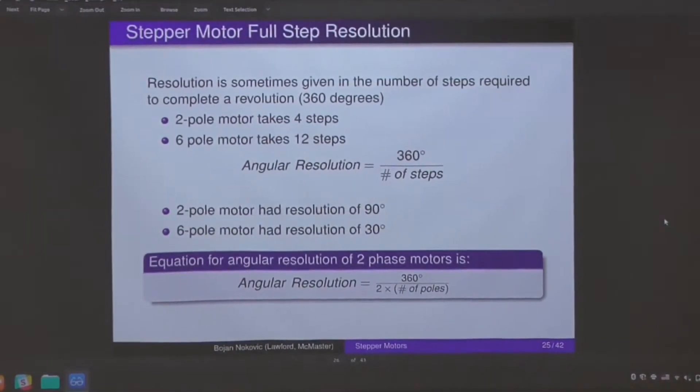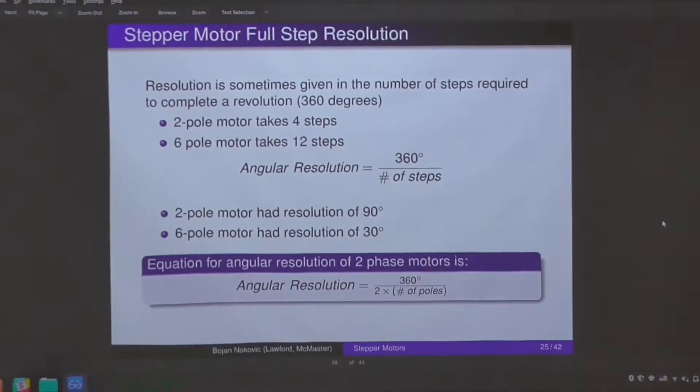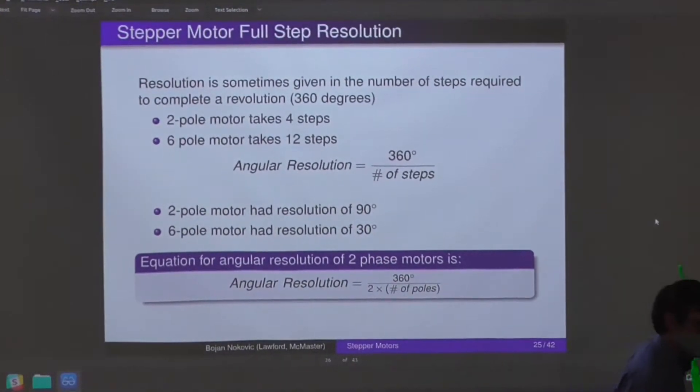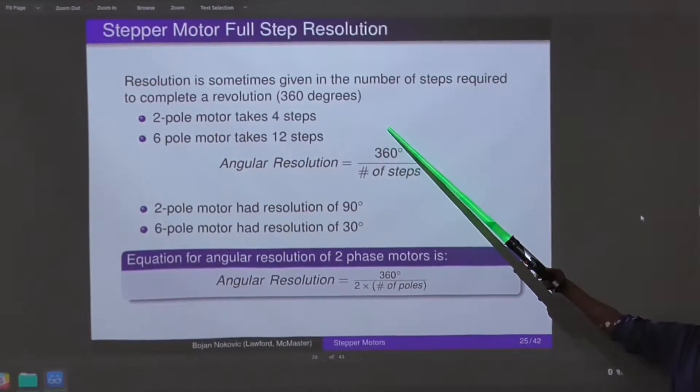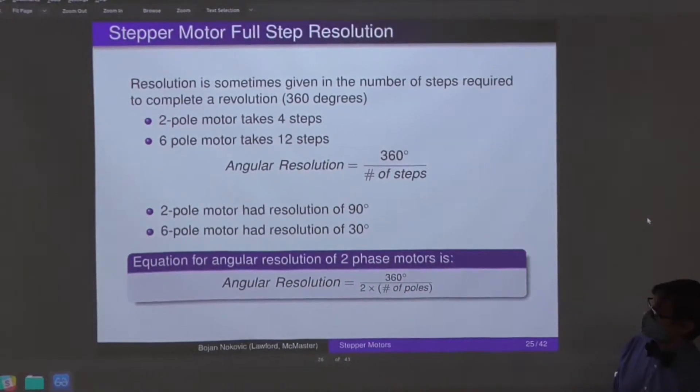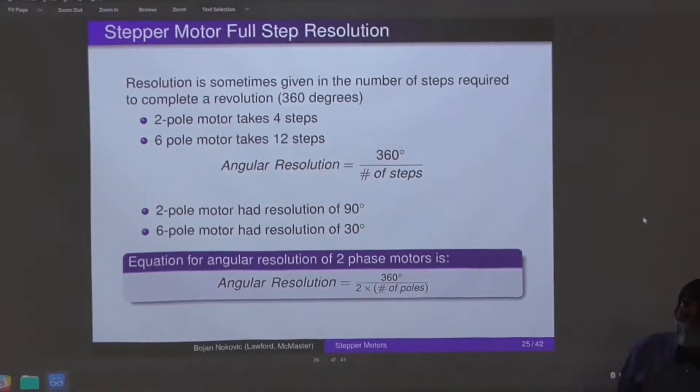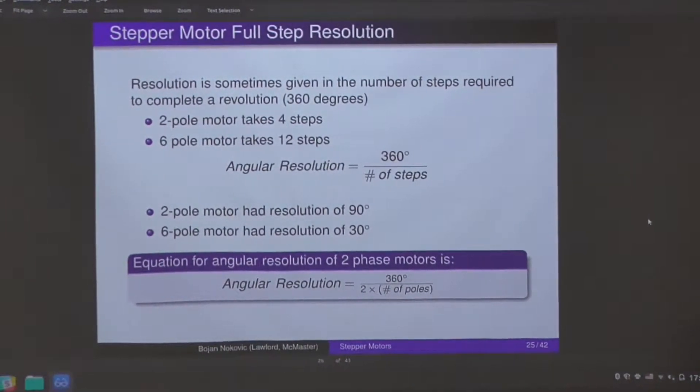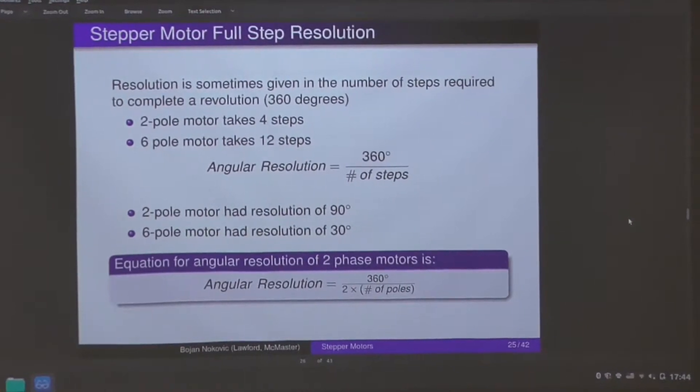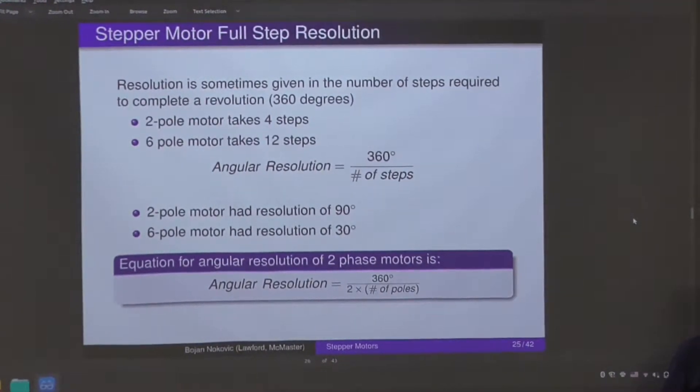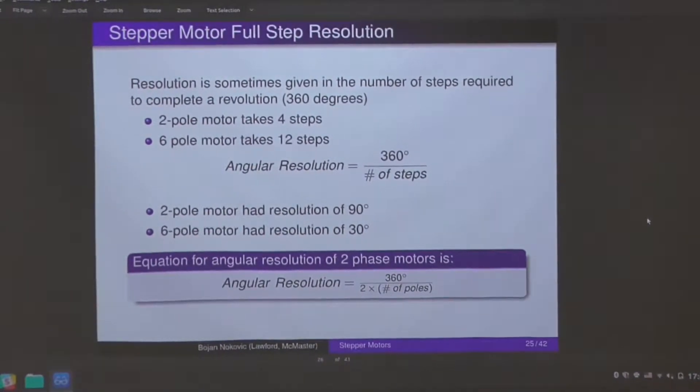That leaves us about where we were. We went through this example. Resolution is sometimes given in the number of steps required to complete a full revolution. So if we have a two-pole motor that takes four steps. If we have a six-pole motor, that takes 12 steps. The angular resolution of a stepper motor is equal to 360 degrees divided by the number of steps, where the number of steps is the number of poles multiplied by the number of phases. Make sense? This should be fairly intuitive from the manner in which we are adding phases and poles.